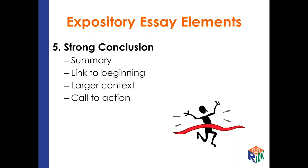Writers may use many types of conclusions. Some common types include a summary, which sums up all of your main points — the most basic and popular type, but be careful not to repeat your thesis. Sometimes writers may use a link back to the beginning, which is a nice companion for an introduction that features anecdotes, quotes, or problem solving. Tying the end to your beginning gives readers a satisfying sense of closure. Keep in mind that if you try too hard to connect your conclusion to your introduction, it may come off as contrived and artificial.